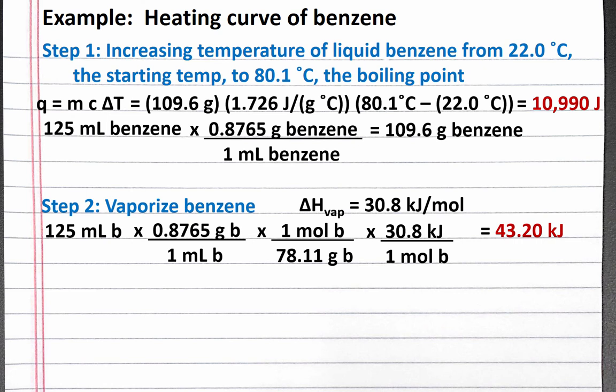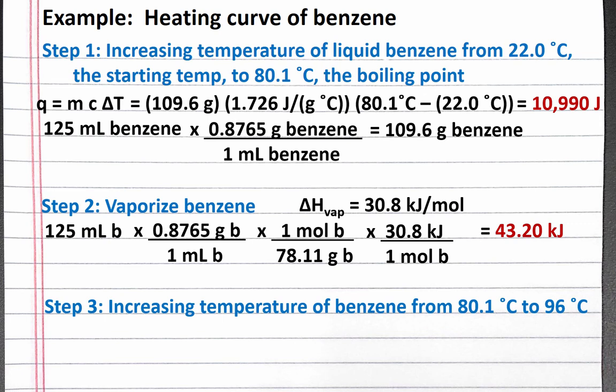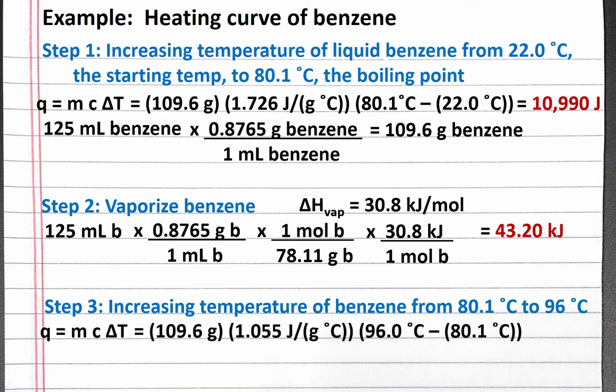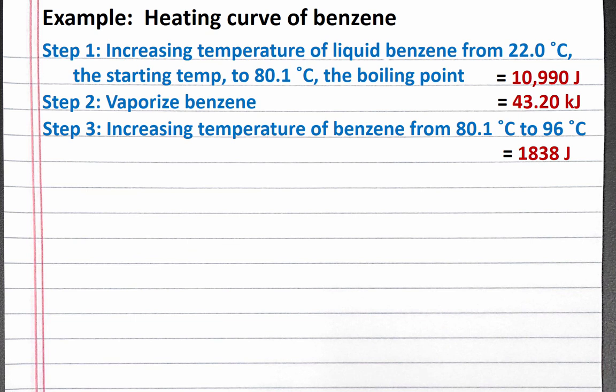Our third step is to increase the temperature of benzene from 80.1 degrees Celsius to 96 degrees Celsius. We'll use Q equals MC delta T again. Plugging in the mass we calculated earlier, the specific heat capacity for gaseous benzene, and the change in temperature, we should get 1,838 joules.